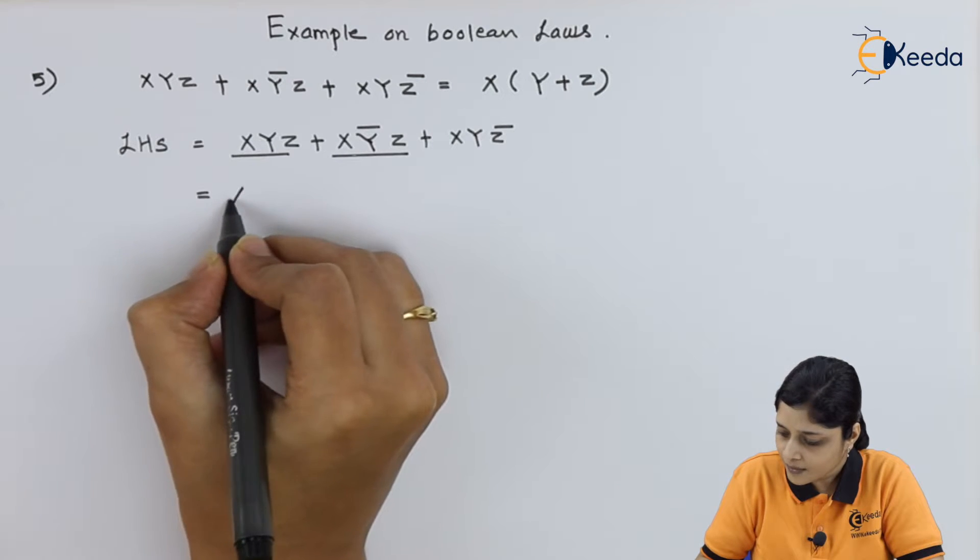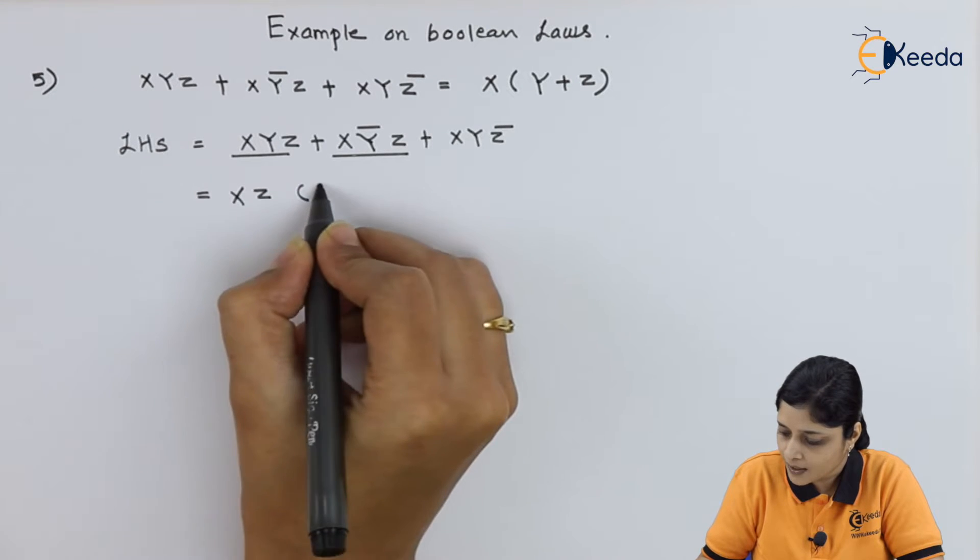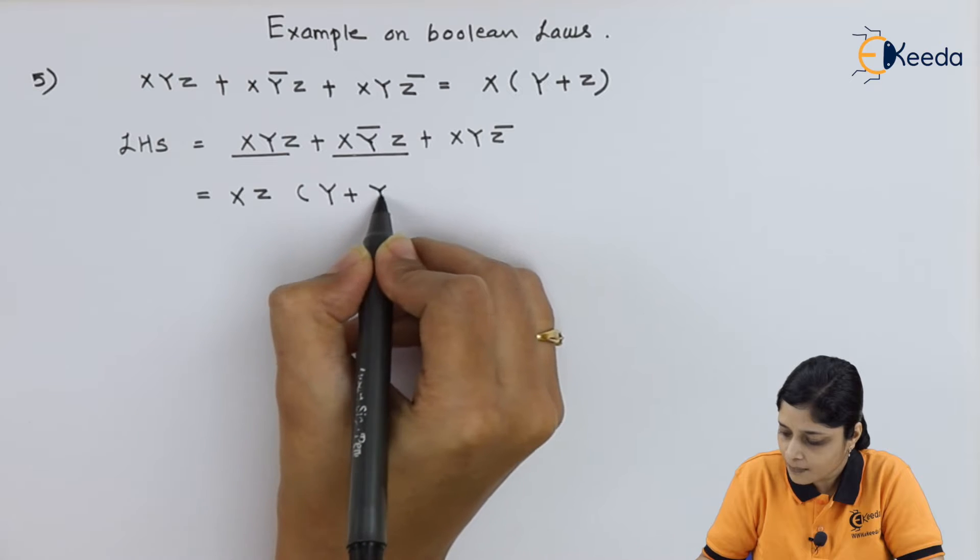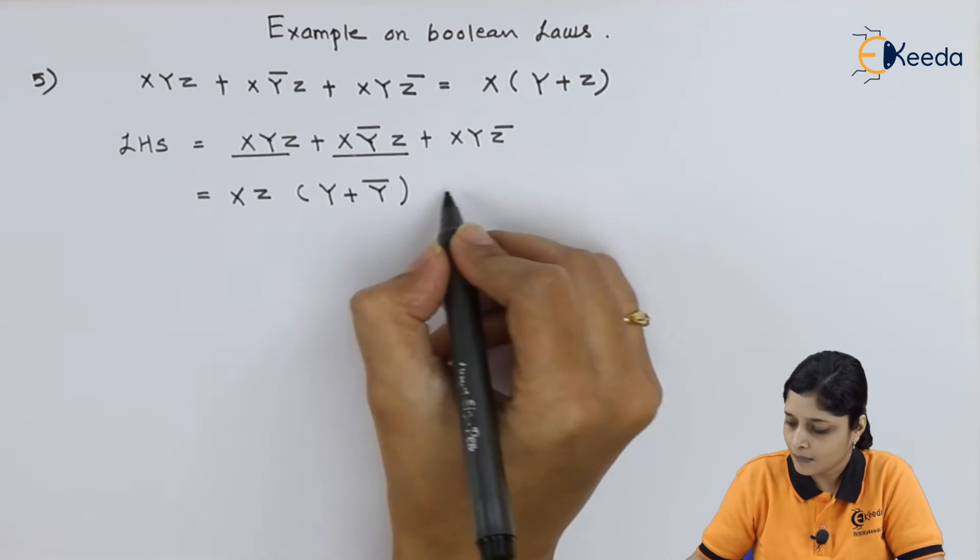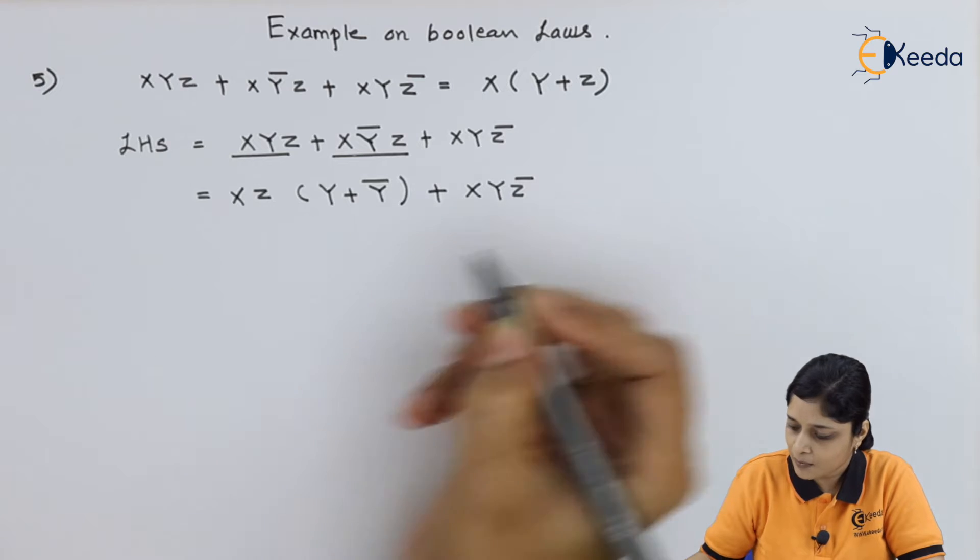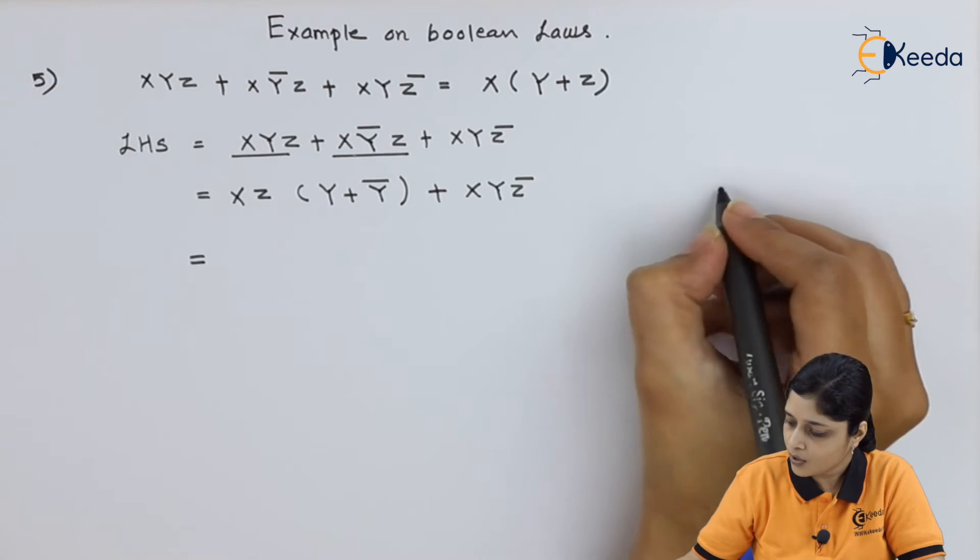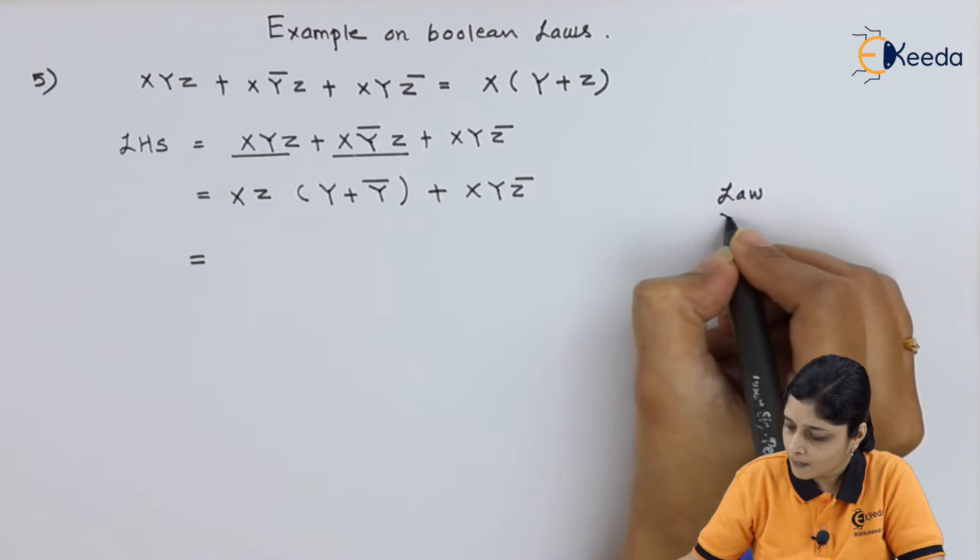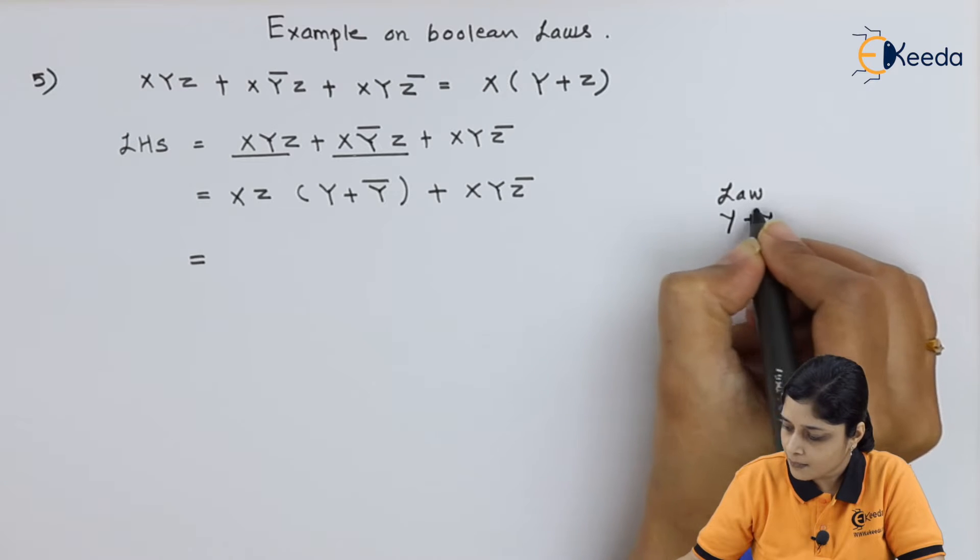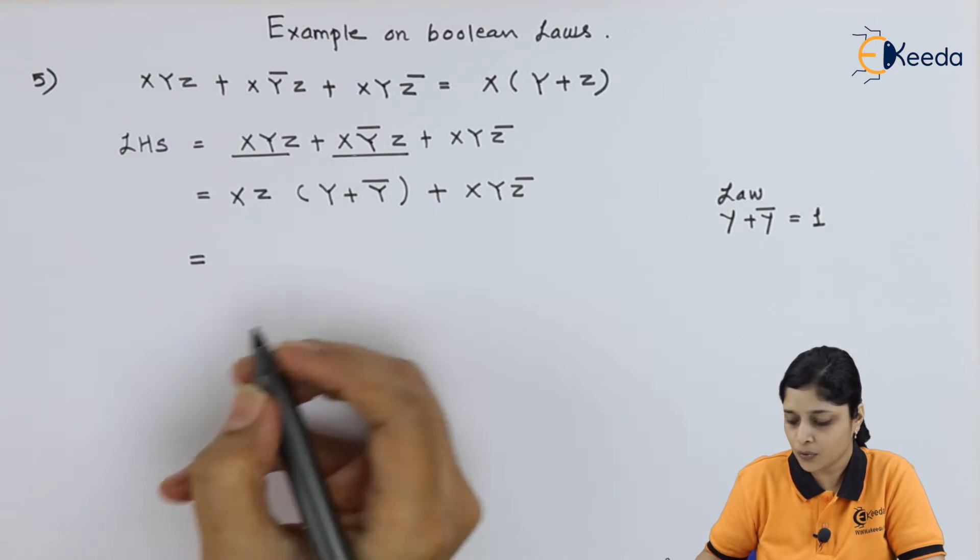you can take xz common in bracket y plus y bar plus xyz bar. Now, according to the law, y plus y bar equals to 1. You already know.